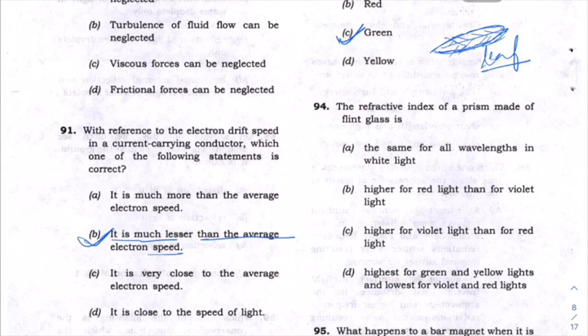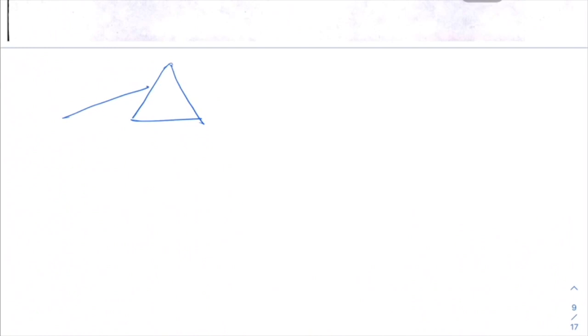The next question is about the refractive index of a prism made of flint glass. Suppose there is a prism and white light enters it.